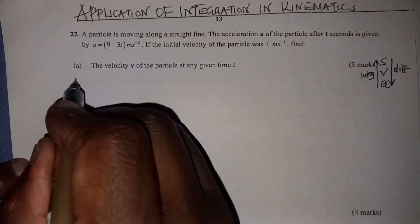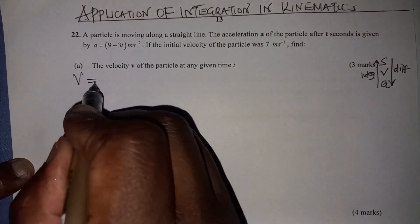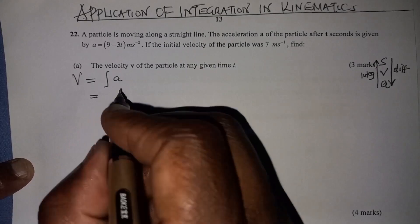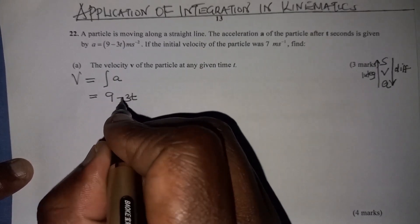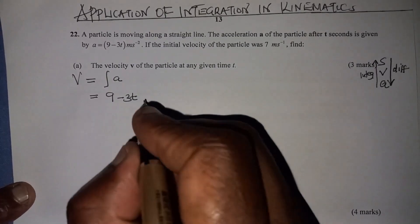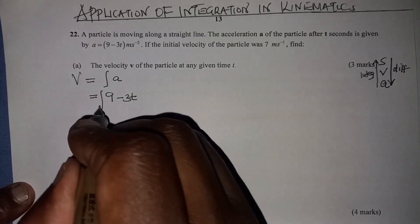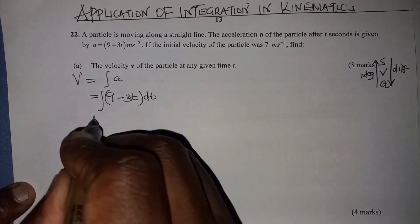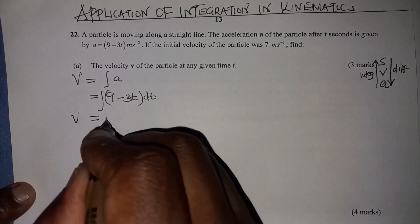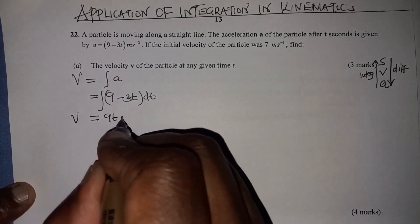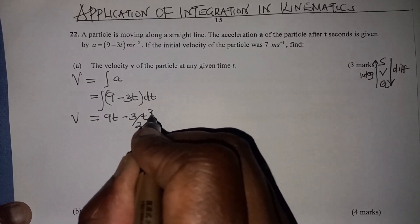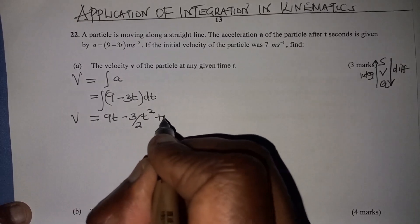So in this case, to get velocity, we shall integrate acceleration. Acceleration is 9 minus 3t, and we integrate this with respect to t. When you integrate this, you get velocity to be 9t minus 3 divided by 2 times t squared, plus the constant c.